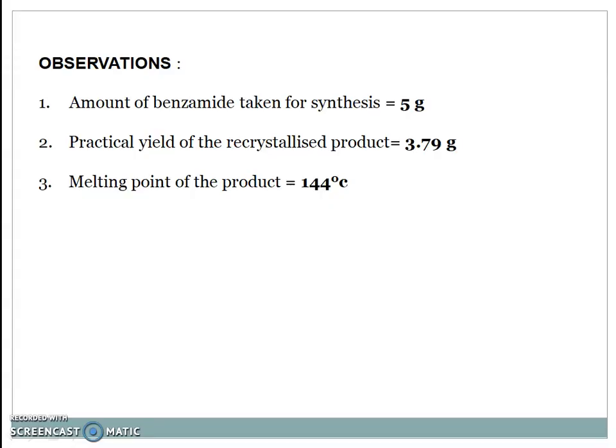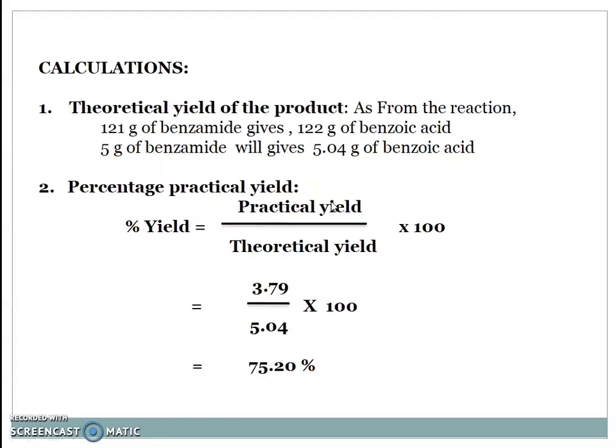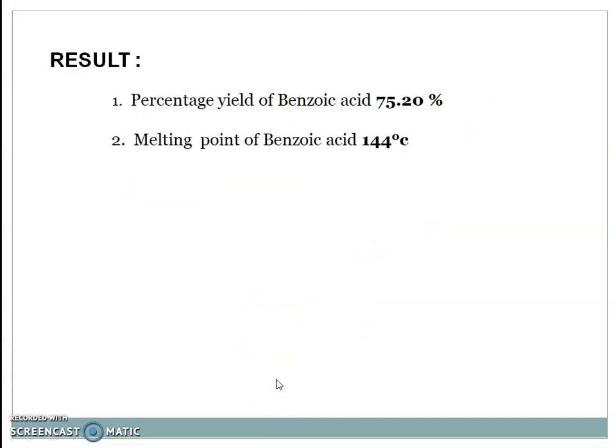Observations: Amount of benzamide taken for synthesis is 5 grams. Practical yield of the recrystallized product is 3.79 grams. Melting point of the product is 144°C. Calculation: Theoretical yield - as 121 grams of benzamide gives 122 grams of benzoic acid, therefore 5 grams of benzamide will give 5.04 grams of benzoic acid. Percent practical yield is calculated using formula: % yield = (practical yield / theoretical yield) × 100 = (3.79 / 5.04) × 100 = 75.20%.